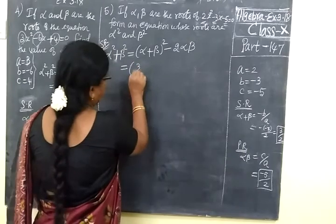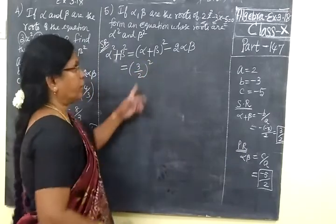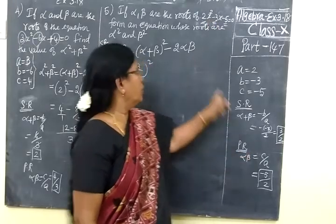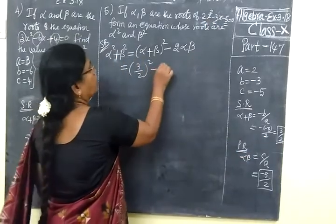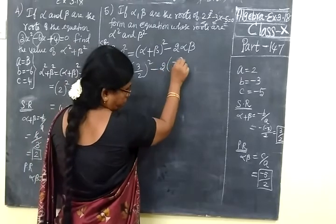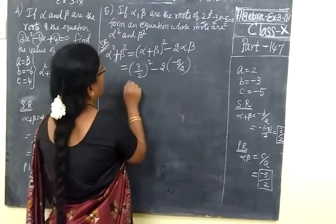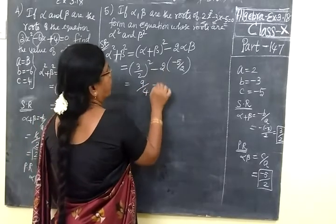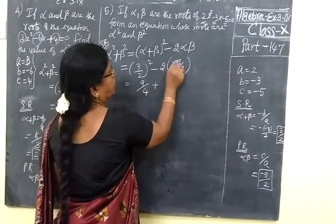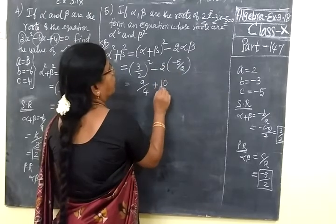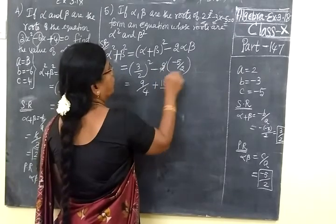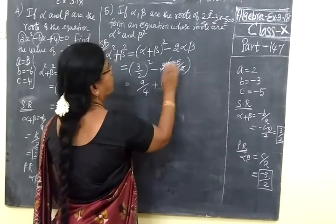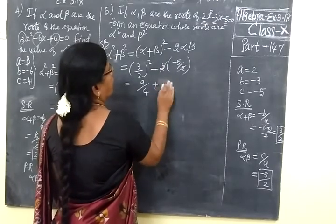In the given equation, minus 2 alpha beta, minus 5 by 2, equal to 9 by 4. Minus into minus is plus. 10 by, you can cancel 2. 2 cancels. Minus into minus is plus. So here you write 5.